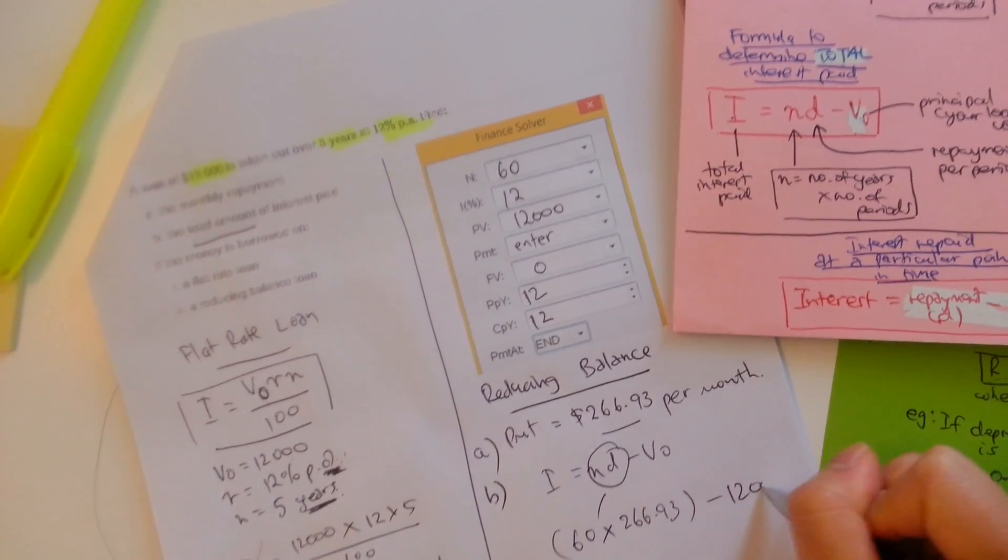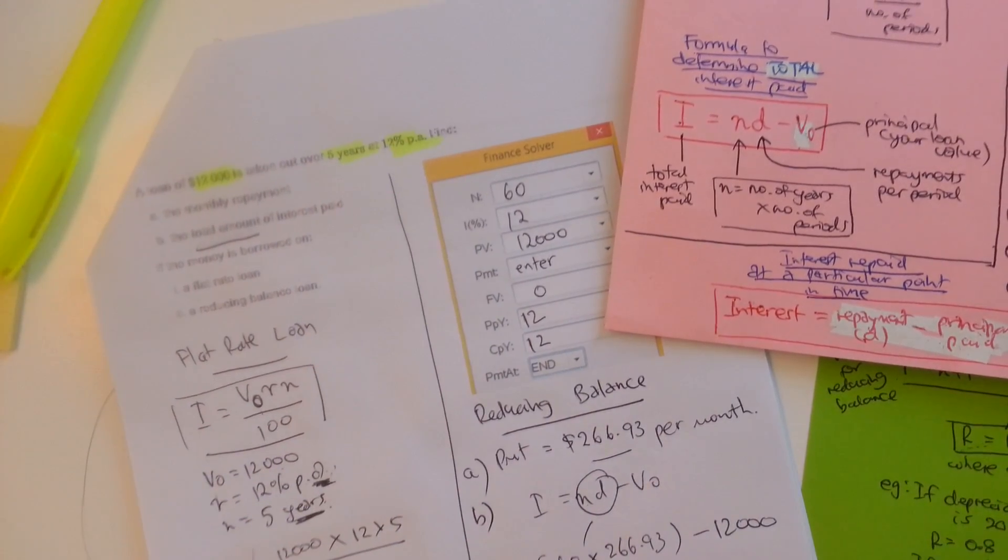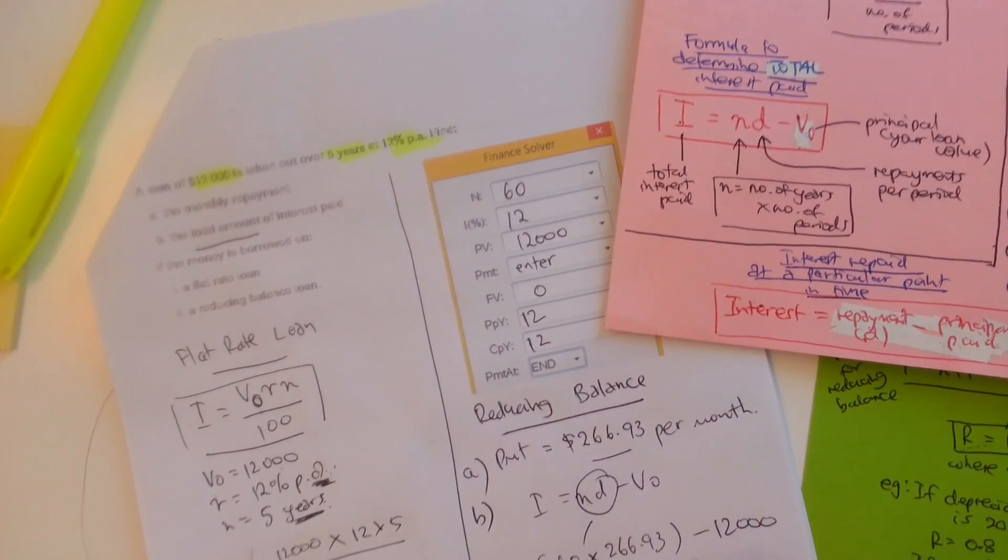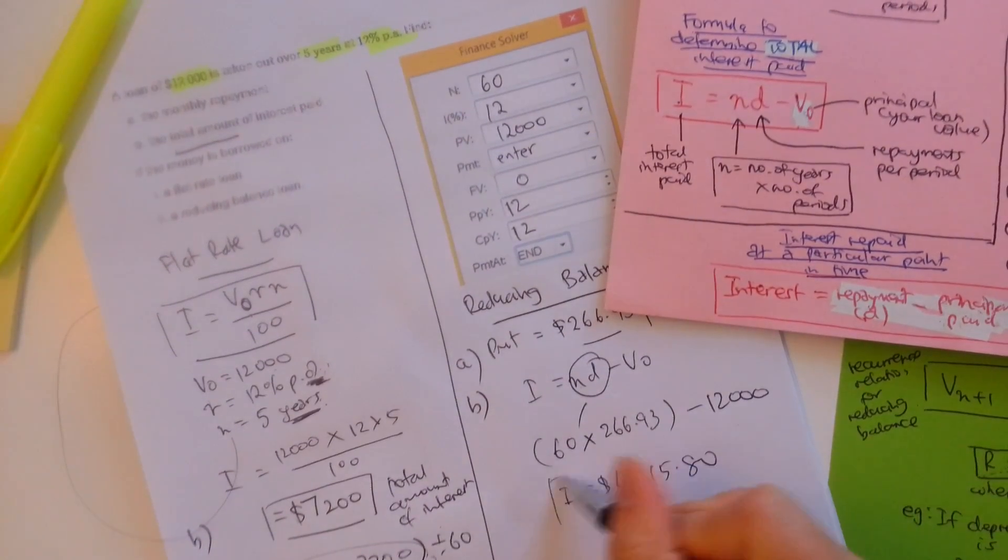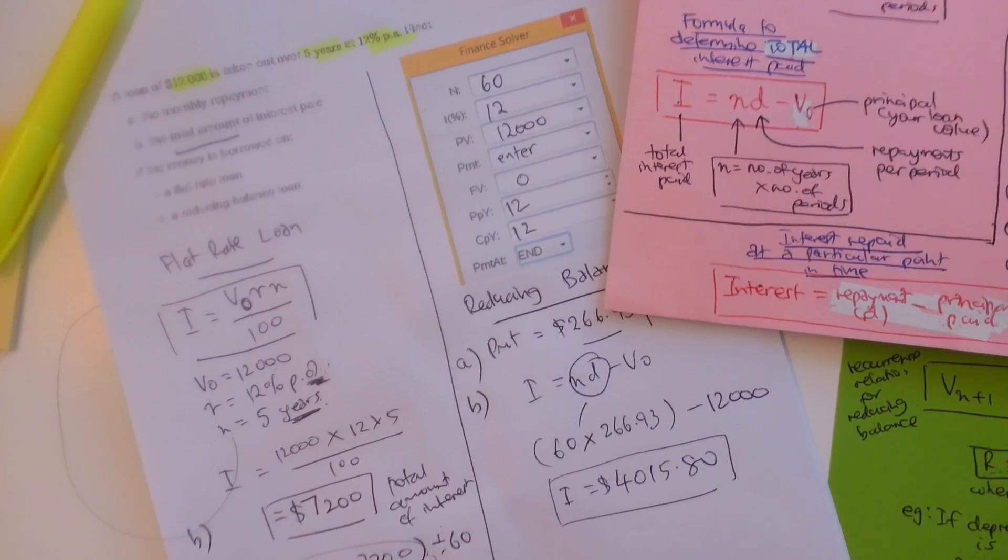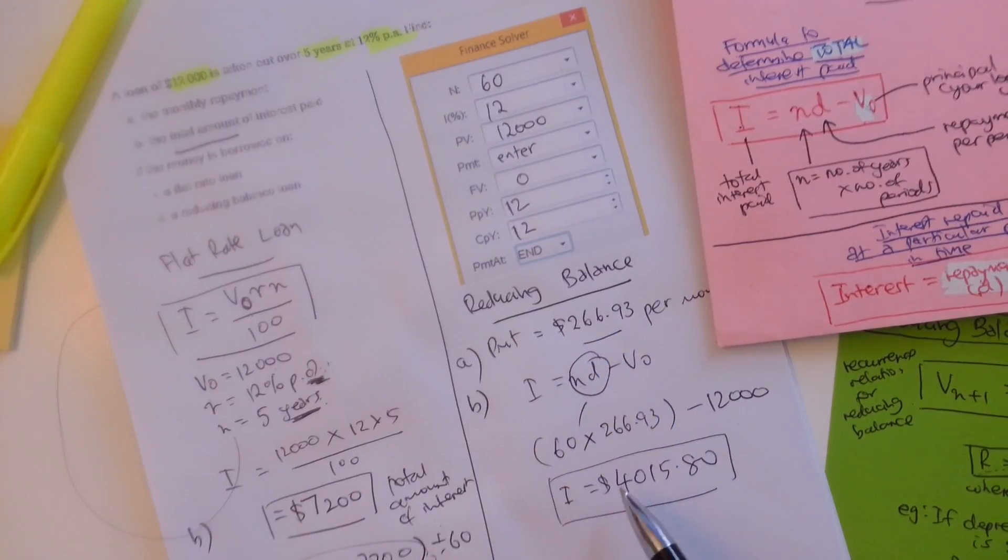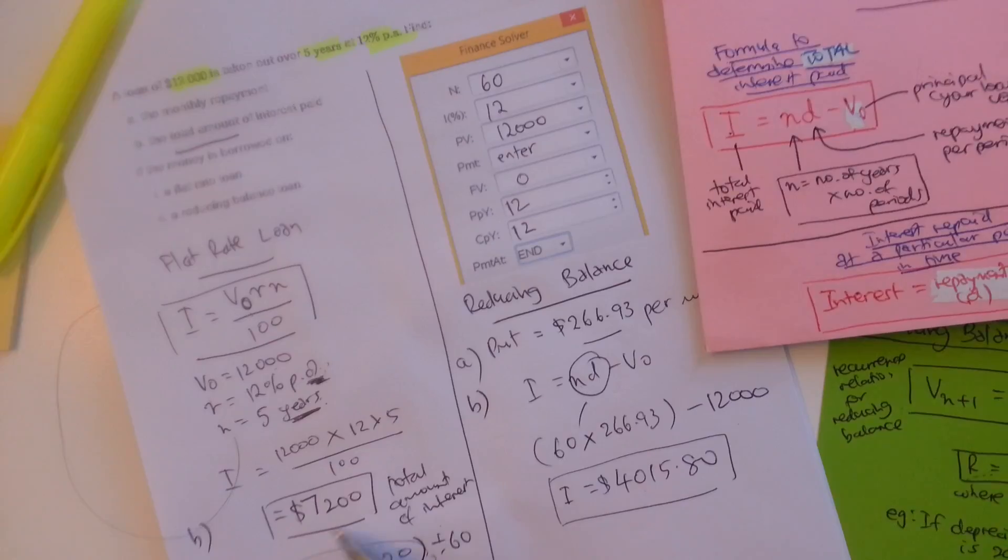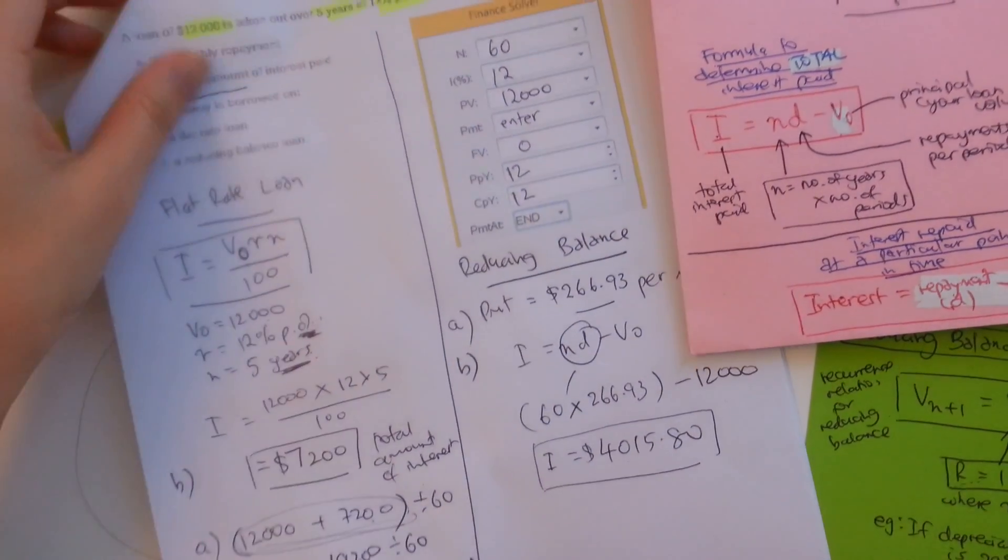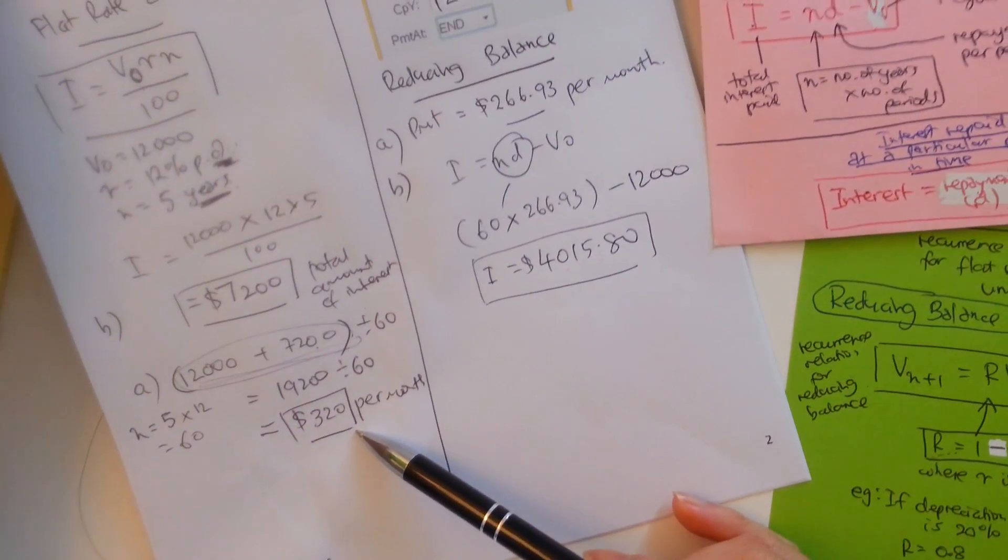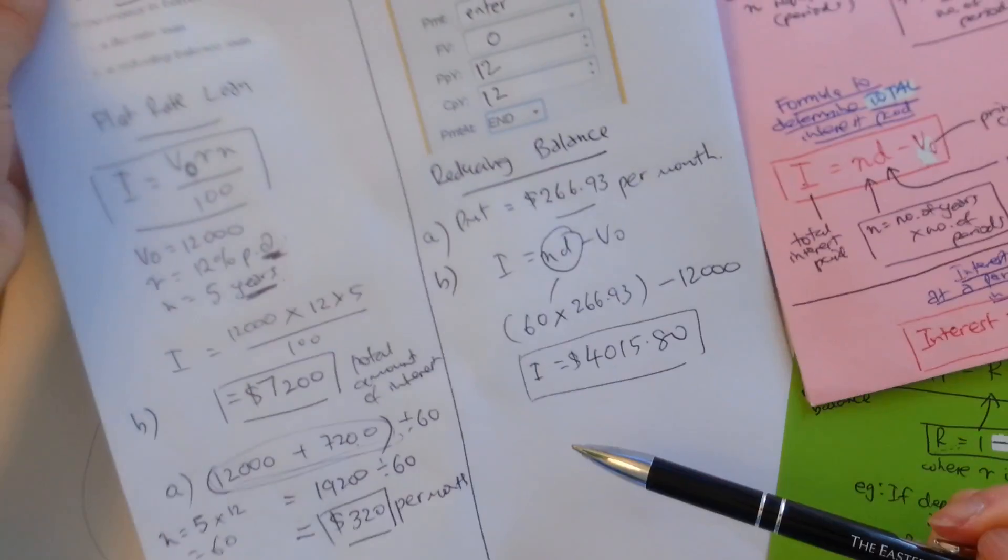We're going to subtract 12,000 away from it because that's the initial value. And we should get, the amount of interest would be $4,115.80. So, as you can see here, it seems that using the reducing balance loan, it's kind of better in terms of the amount of interest that you pay as opposed to flat rate. And also here we're paying $320 per month for every month for five years. Here we're only paying $266 per month for five years as well. So there you go. That's the first example on page two.